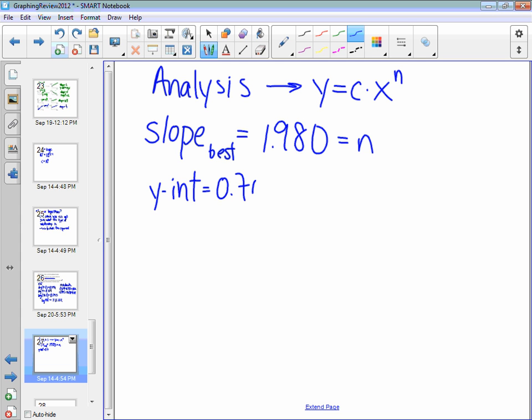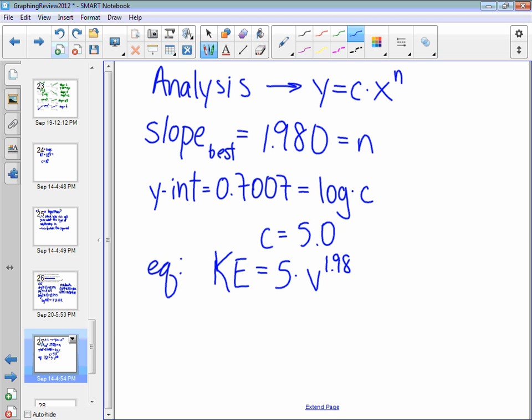And so what we get here, our y-intercept on that graph is 0.7007. This is log C, like we said before, take 10 to this, and what you end up with for C is 5.0. And so we have an equation now, and that equation is that the kinetic energy, or y, is equal to 5 times v to the 1.98 power.